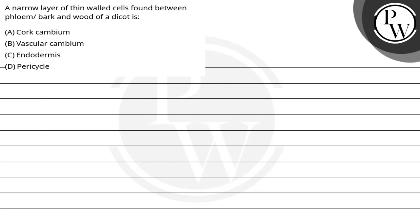Hello Bacho, let's see this question. The question says: a narrow layer of thin wall cells found between the phloem or bark and wood of a dicot is?